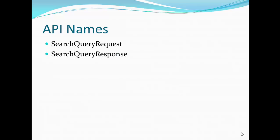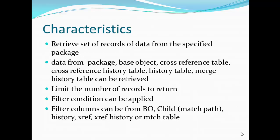So what does this API come with? It comes with a request and a response object — first is Search Query Request and second is Search Query Response. The Get Query API is used to retrieve only one record from the database, but Search Query is used to retrieve a set of records from the specified package or base object.